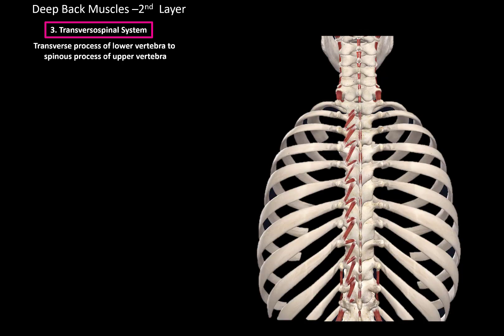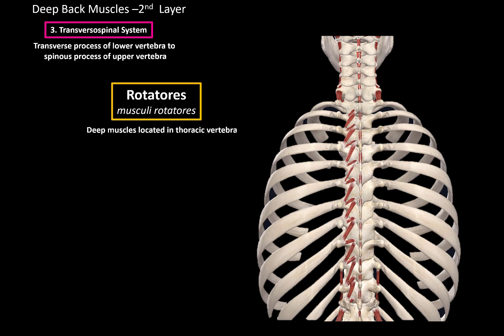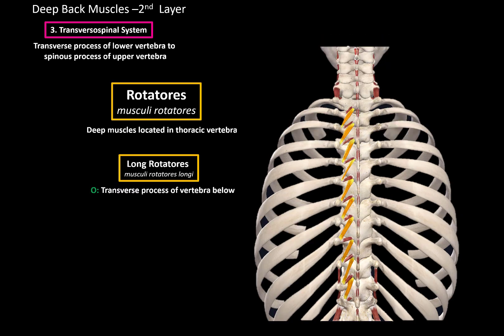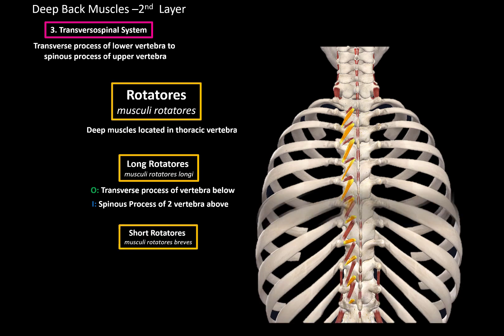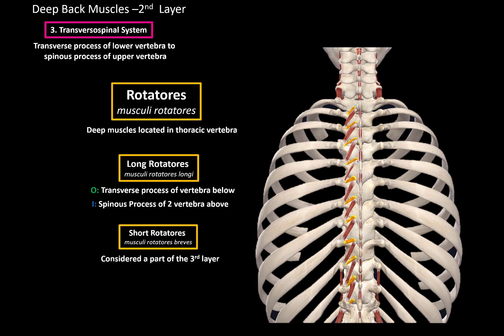The first ones are the rotatores muscles, located in the thoracic region and consisting of long and short fibers. The long rotatores originate from the transverse process of the vertebrae below and insert at the spinous process of two vertebrae above, so it skips one vertebra. The short rotatores are generally considered part of the third layer of deep back muscles, together with the suboccipital, interspinalis, and intertransversarii. They originate at the transverse process of the vertebrae below and insert at the spinous process of one vertebra above.